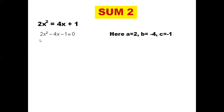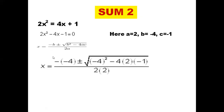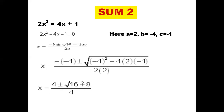Now we compare with ax² + bx + c = 0. We get a = 2, b = -4, c = -1. Now we use the formula and substitute the values: x = -(-4) ± √((-4)² - 4 × 2 × (-1)), divided by 2 × 2. So minus minus becomes positive: 4 ± √(16 - 4 × 2 × (-1)). Since c is -1, minus times minus is plus, so 4 × 2 × 1 = 8. So we have 16 + 8 = 24, divided by 4.